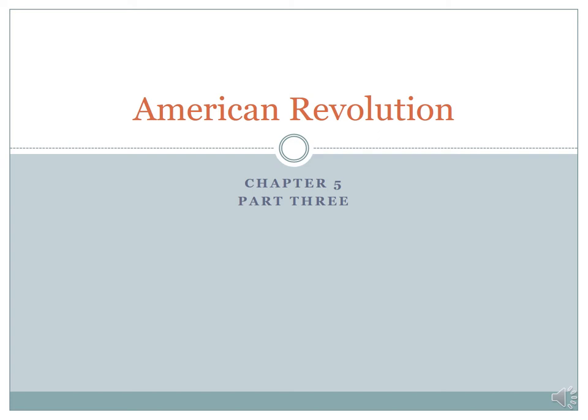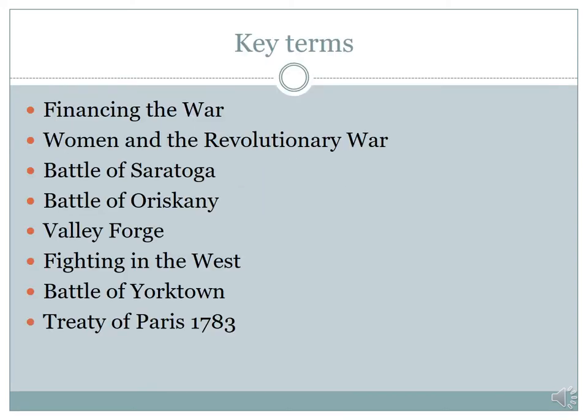Hey students, welcome back. We are going to get into American Revolution Chapter 5 Part 3. This is the final in a three-part series on the American Revolution. Here we have the key terms we're going to be discussing today. We'll start with the financial difficulties the American Revolution is causing the colonists, then give a nod to some of the women in the Revolutionary War, then move on to battles of the Revolutionary War, the Battle of Yorktown, and the Treaty of Paris of 1783.